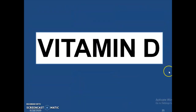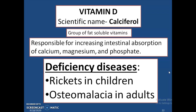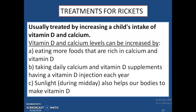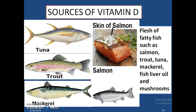Vitamin D is also known as calciferol. It is a group of fat-soluble vitamins responsible for increasing intestinal absorption of calcium, magnesium, and phosphate. Deficiency of vitamin D causes rickets in children and osteomalacia in adults. Treatment includes increasing intake of vitamin D and calcium through food, taking daily calcium and vitamin D supplements, having a vitamin D injection each year, and standing in sunlight during midday. Sources include tuna, trout, mackerel, salmon, fish liver oil, and mushrooms.